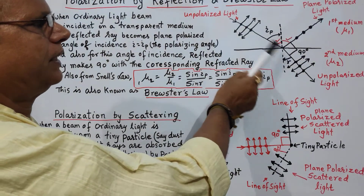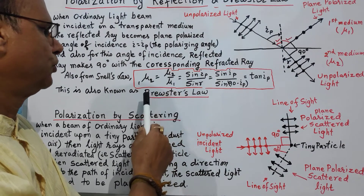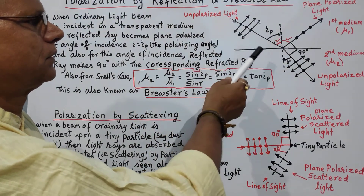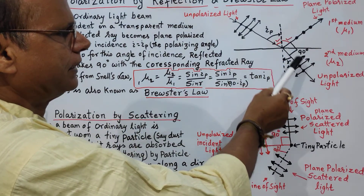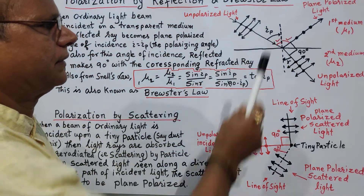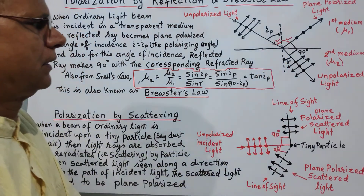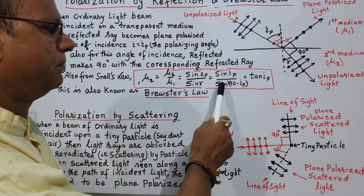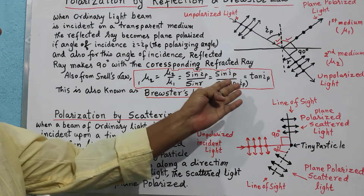In this process, the refractive index of the second medium with respect to the first medium — that is mu2 with respect to mu1 — equals, according to Snell's law, sin i upon sin r. Since the reflected and refracted light make 90 degrees, and since angle of incidence equals angle of reflection, the angle r equals 90 minus ip. So we write sin ip by sin(90 minus ip), which equals sin ip by cos ip, and therefore it becomes tan ip. This is known as Brewster's law.